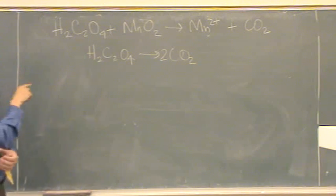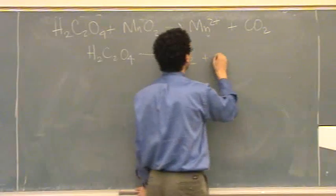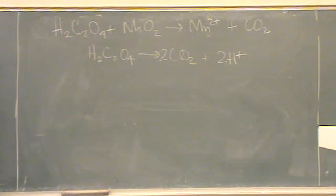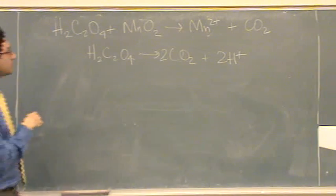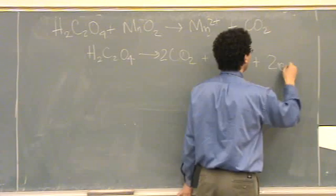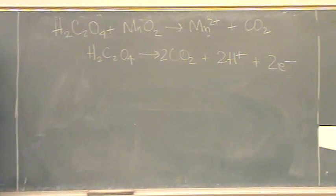Third is hydrogens. We have two hydrogens on the left side, so we put 2H+ on the right side. There's no charge on the left, so step four is to add electrons. We'll add it over here so that overall charge on both sides is zero.